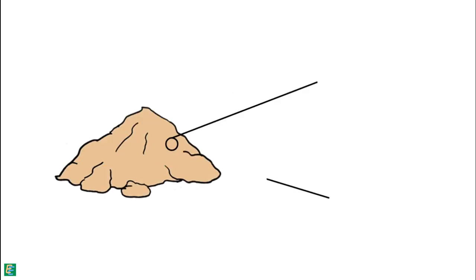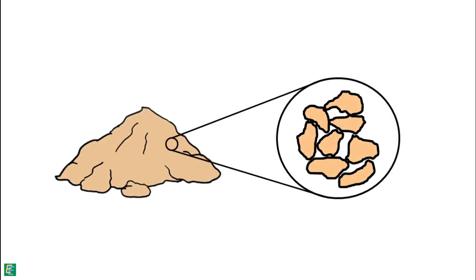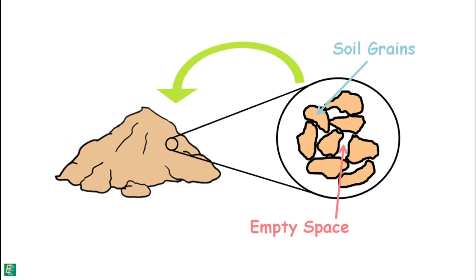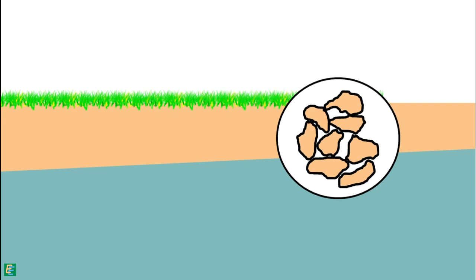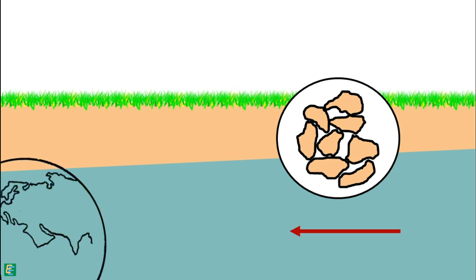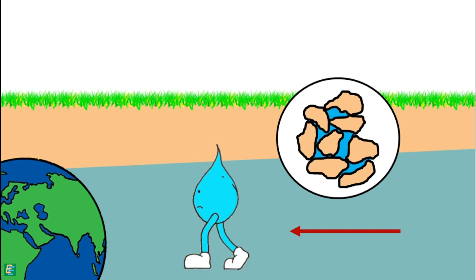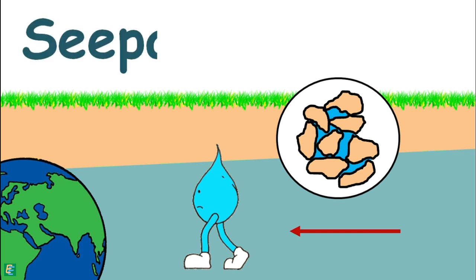A soil mass is a huge collection of small particles we call soil grains. These soil grains, when depositing in a soil mass, enclose empty space between them which we call voids. The free water available underground moves inside under the influence of gravity and flows through these voids. This phenomenon of movement of water through the soil is called seepage.